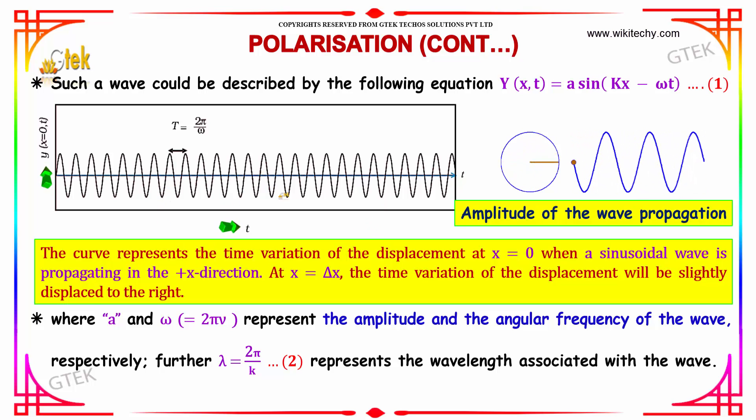The curve represents the time variation of the displacement at x = 0 when a sinusoidal wave is propagating in the x direction. At x = Δx, the time variation of the displacement will be slightly displaced to the right.